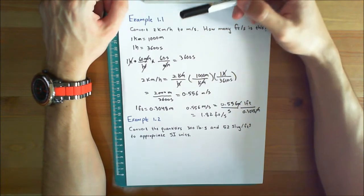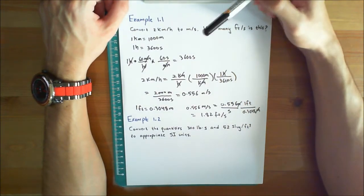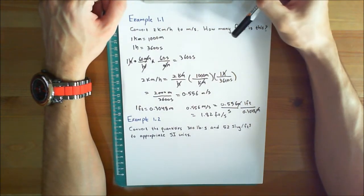The first example problem is already solved. Convert 2 kilometers per hour to meters per second. How many feet per second is this?